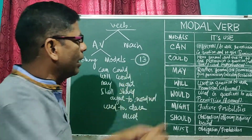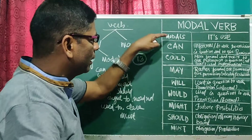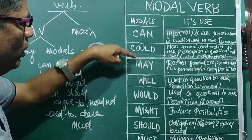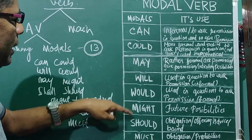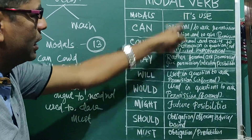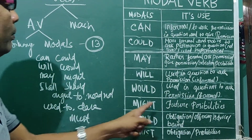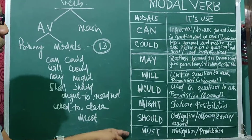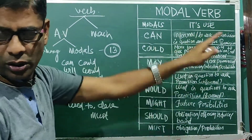I have given this chart, and these are the number of modals we use: can, could, may, will, would, might, should, must. Today we will discuss about these modals and their uses.